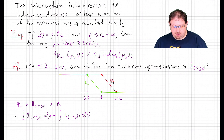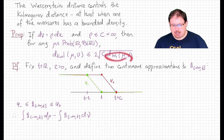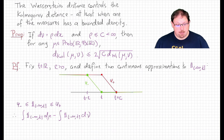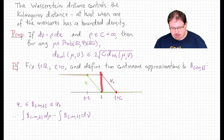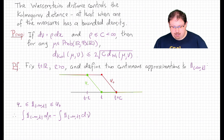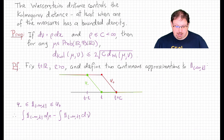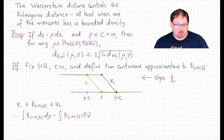To prove this theorem, what we'd really like is for the test functions used in the Kolmogorov metric — those indicator functions of half-infinite intervals — to be Lipschitz functions. Of course they're not Lipschitz; they're not even continuous. But we can approximate that indicator function from above and below by Lipschitz functions. For each t and each ε, we fix a Lipschitz function ψ± that approximates the indicator of the interval from minus infinity to t — constantly 1 or 0 nearly everywhere the indicator is, but with a continuous slope of 1/ε over a transition interval. These are piecewise differentiable and hence Lipschitz, with Lipschitz norm 1/ε.